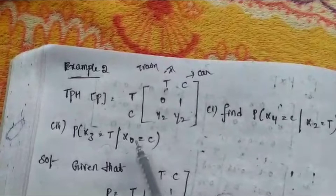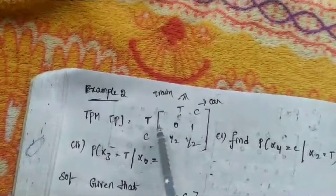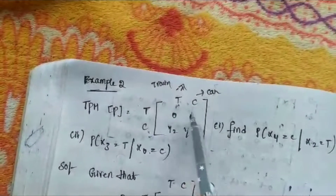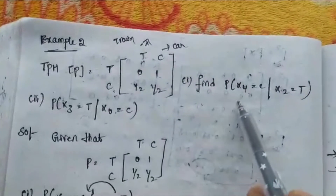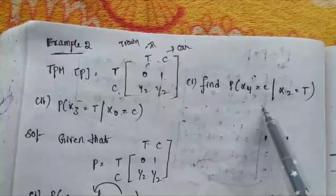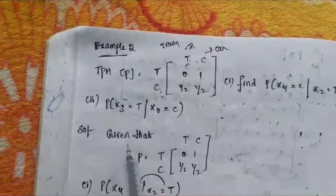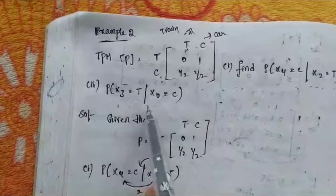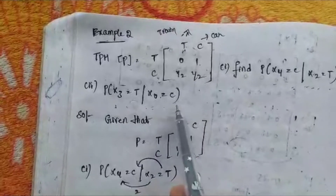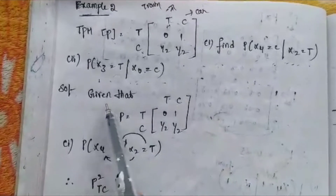Let us consider another example problem to understand n-step transition more easily. The given TPM has states Train and Car with elements: 0, 1 / 1/2, 1/2. We are asked to find P(X4=Car | X2=Train) and P(X3=Train | X0=Car).